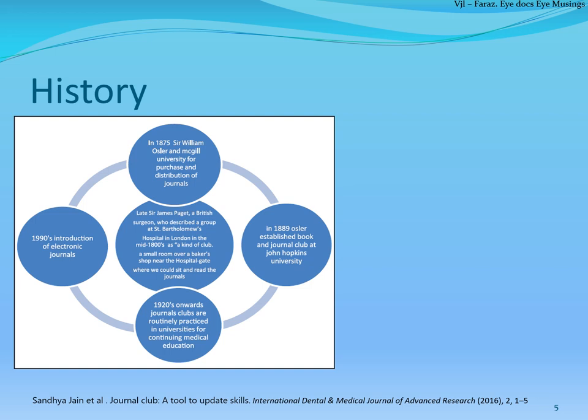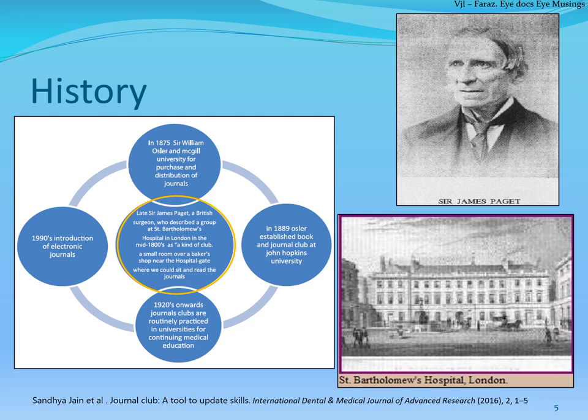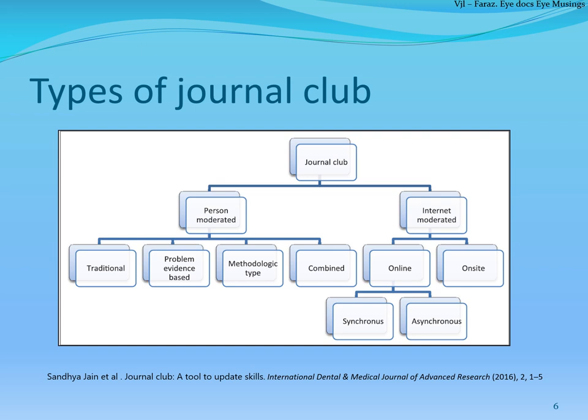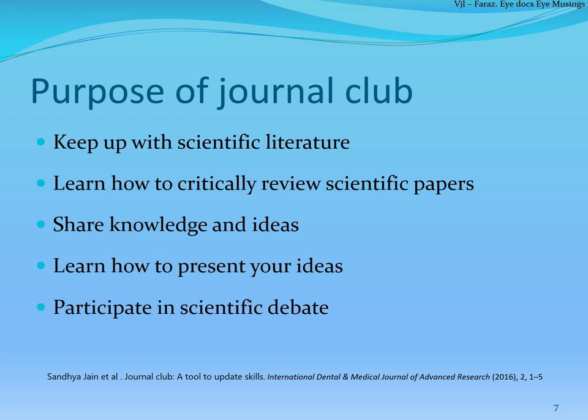Looking back into history, the earliest journal club was dated back to the mid-1800s, started by Sir James Paget. It was an informal gathering in a bakery near their hospital, showing the inquisitiveness of doctors of those times. Journal club has evolved over the years from being person-moderated to internet-moderated. Nowadays we even have journal clubs appearing on platforms like Twitter. The purpose of journal club is to keep up with scientific literature, critically review papers, share knowledge, and increase your skills of scientific debate.